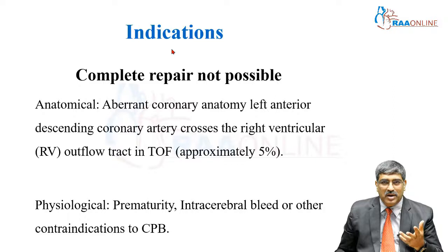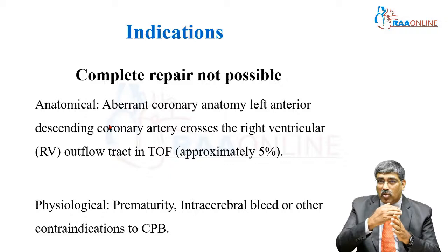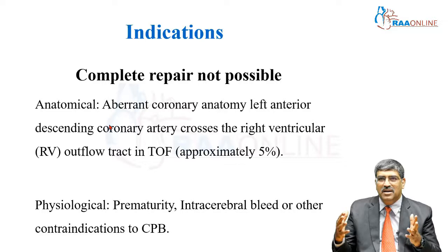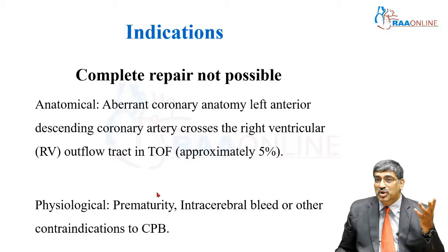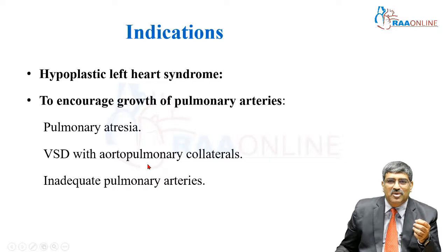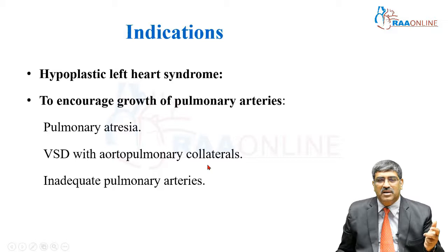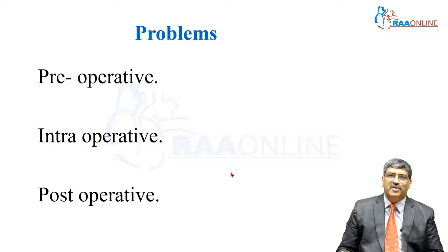The second indication is where repair is not possible. The child's condition may not allow a repair — primary repair is not possible, but a palliative shunt can be done. This can be anatomical, such as an aberrant coronary artery like the left anterior descending (LAD) crossing the right ventricular outflow tract, making complete correction impossible without disrupting it. In those cases, we go for a palliative procedure initially, then complete correction when the child has grown up. Physiological contraindications include prematurity, intracerebral bleed, and other conditions where only a palliative procedure is feasible. Other indications include hypoplastic left heart syndrome and encouraging growth of the pulmonary artery, as in pulmonary atresia with VSD and aortopulmonary collaterals with inadequate pulmonary arteries.